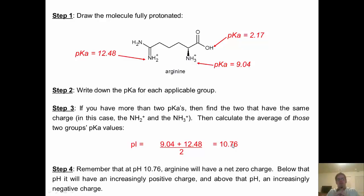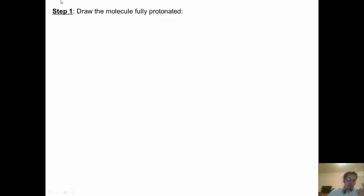Step 4 is remember what that means. What that means is that arginine at pH 10.76 will exist in a state that has a net zero charge. Below that pH, we start to protonate stuff, including this OH, so we see our molecule become more and more positively charged. Above that pH, we start to deprotonate, and it starts to have an increasingly negative charge.